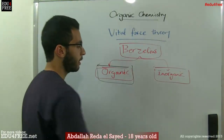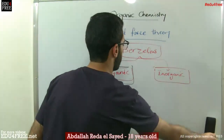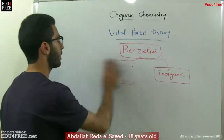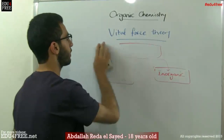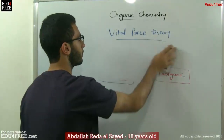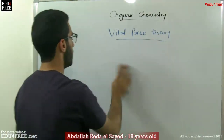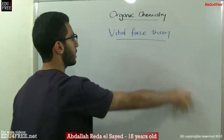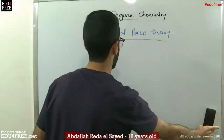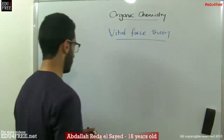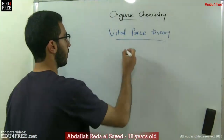Then, after about 20 years, came another scientist called Wöhler. And that scientist proved that Berzelius was wrong.